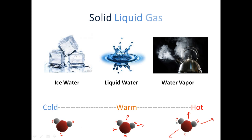The temperature, when we talk about the states of matter, basically tells us how fast the molecules in a substance are moving. Solid ice is going to be less than 0 degrees. Liquid water is going to be between 1 and 99 degrees. And water vapor, or water gas, is going to be over 100 degrees.